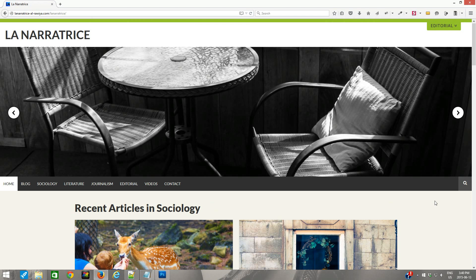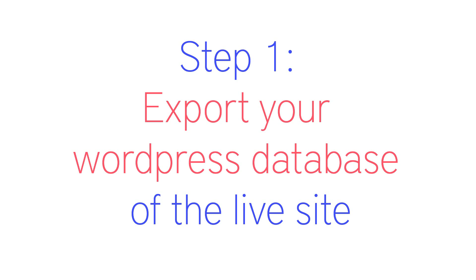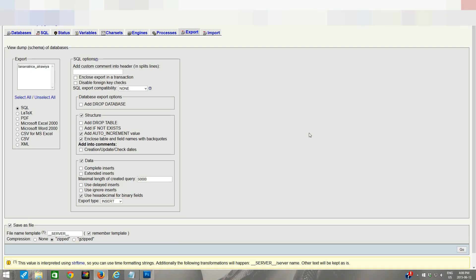The first step in the process of migrating this live WordPress website will be to go to the cPanel, login to the cPanel, go to phpMyAdmin, and export the complete WordPress database of the live WordPress website. This is how we do that.